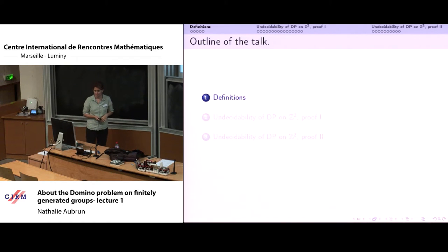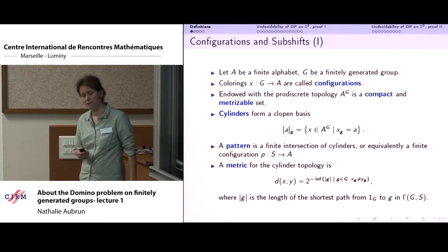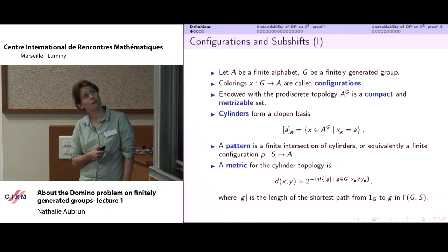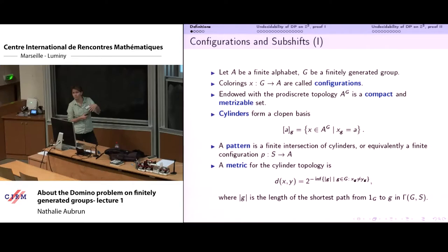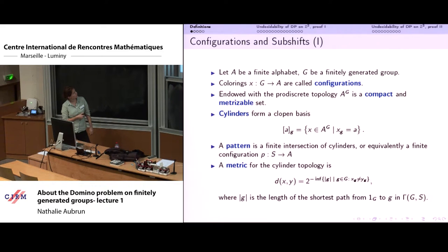First some definitions. You may have already seen the basics of symbolic dynamics. We will focus on subshifts of finite type defined on groups. The principle is that you consider a finitely generated group, colour it with colours chosen among a finite alphabet — this gives you configurations. As in dimension one or two, this set of configurations is compact, which is really important, and you can also define a metric. Definitions are all similar to what exists in dimension one and two.